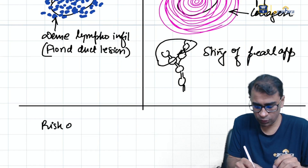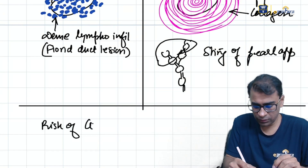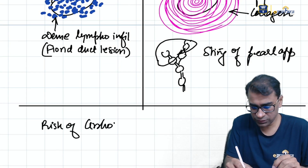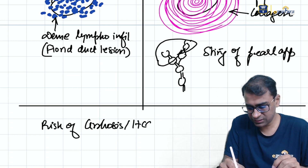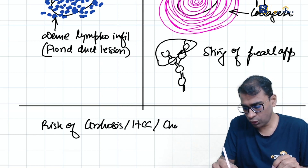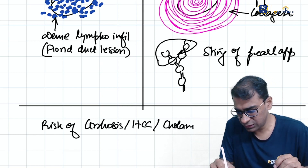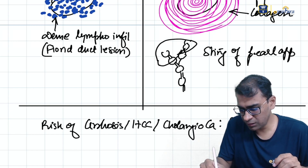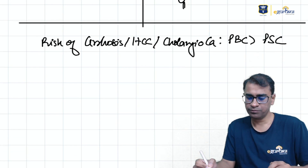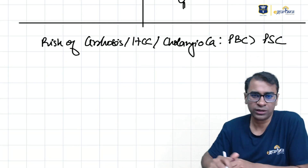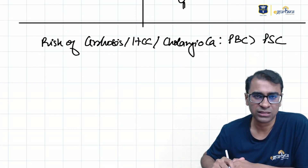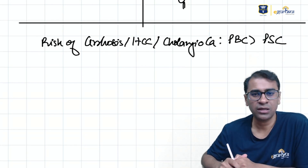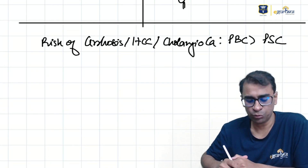The risk of cirrhosis, HCC, and cholangiocarcinoma is higher in PSC compared to PBC.